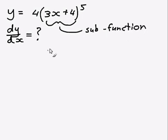What you can do to differentiate this is a process called the chain rule. What you have to do first is let some new variable, let's use u, equal the function inside the brackets. So in this case I'm going to let u equals 3x plus 4.